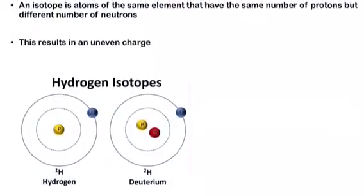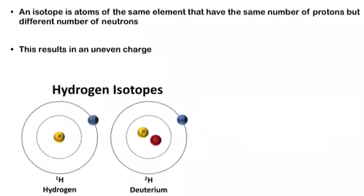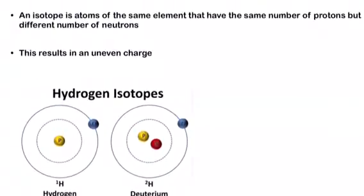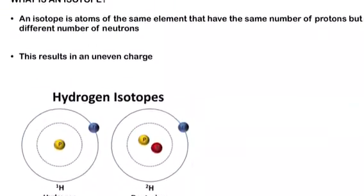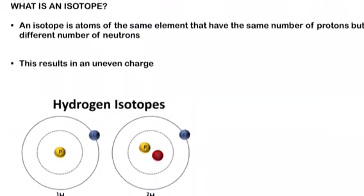What is an isotope? An isotope is defined as any of two or more forms of a chemical element having the same number of protons in the nucleus, or the same atomic number, but having different numbers of neutrons in the nucleus or different atomic weights.